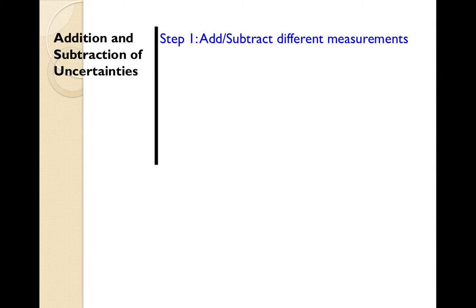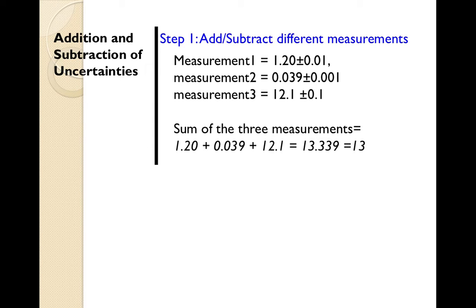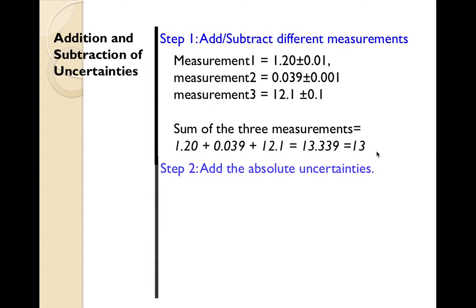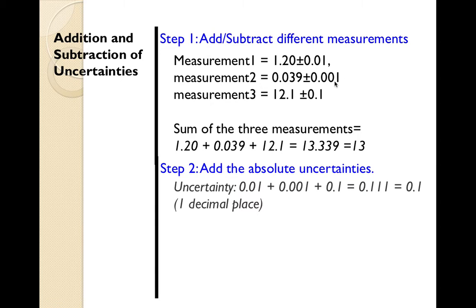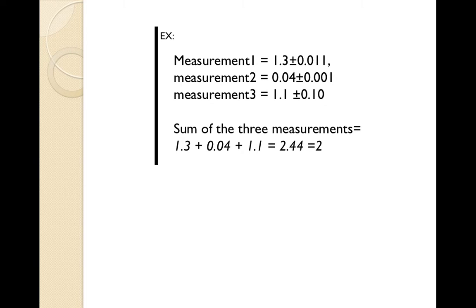Here is an example. The first step in adding and subtracting uncertainties is to add the different measurements. I have three measurements, each with various absolute uncertainties. You want to find the sum of the three measurements — here it shows as 13.339 before taking into account sig figs, and then 13 after. Step 2: add the absolute uncertainties to get a total of 0.1, which is one decimal place. Step 3: put it all together — your total is 13 plus or minus 0.1.